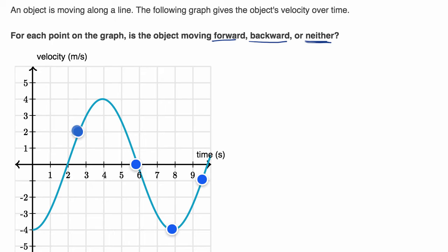Right over here, we see that our velocity is positive. It's a positive two meters per second. So that means that we are moving forward.